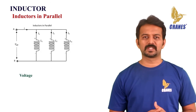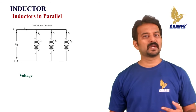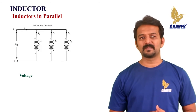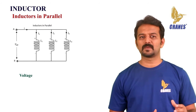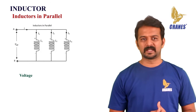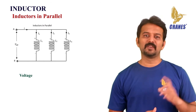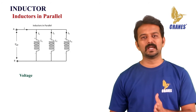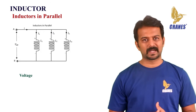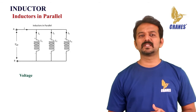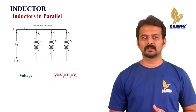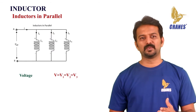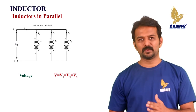Looking at the voltage in a parallel inductor network: the total voltage that appears across a parallel inductors network is the same as the voltage across each individual inductance. If V1, V2, and V3 are the voltages across L1, L2, and L3 respectively, then V = V1 = V2 = V3.